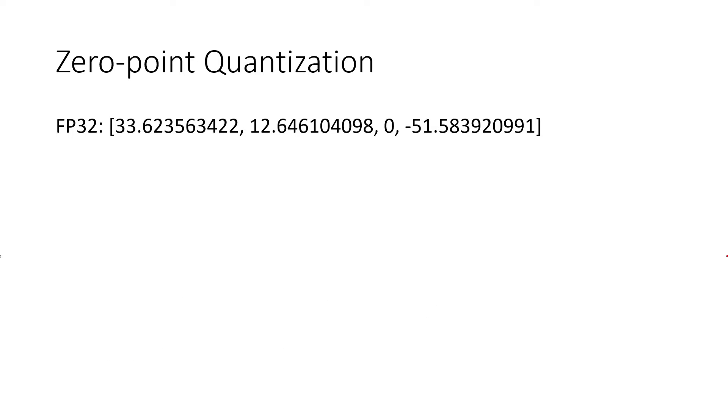There are several ways you can turn floating points into integers, and the most common way is called zero-point quantization. I'm going to step through an example of how this works. The reason this is called zero-point quantization is all the zeros in the original matrix are mapped to zero in the quantized version. We will see later why this is useful for sparse neural networks.